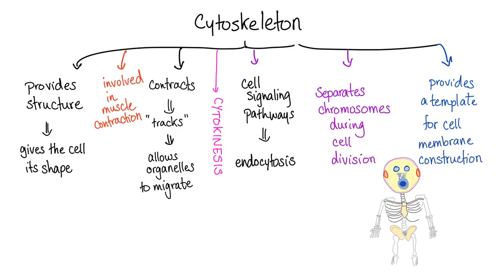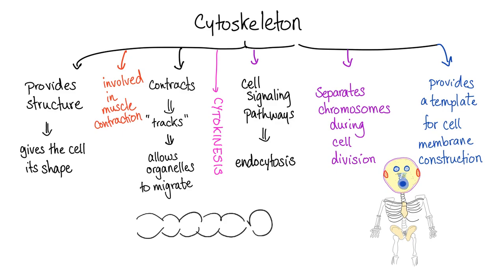Functions of your cytoskeleton: it provides structure, giving the cell its specific shape. It is involved in muscle contraction, because your cytoskeleton can contract. That's how it provides tracts so that organelles can move on these contractile tracts. When they contract, they move. If you've ever watched a worm moving, it contracts — that's how it moves.